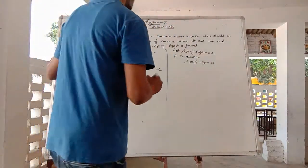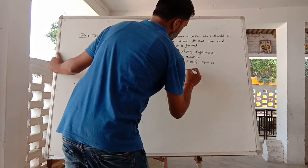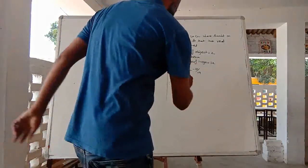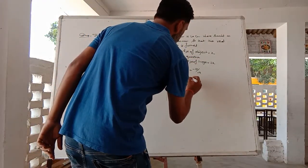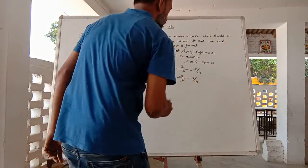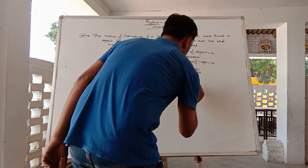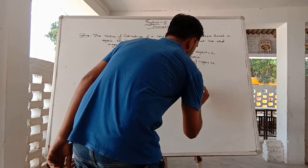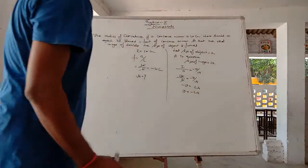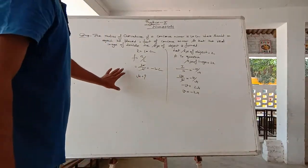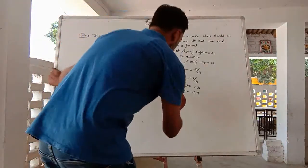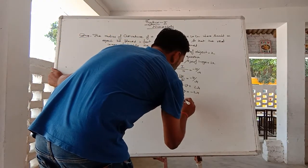Therefore, V is equal to minus 2U. Now applying the mirror formula: 1 upon minus 10 is equal to 1 upon minus 2u plus 1 upon u.